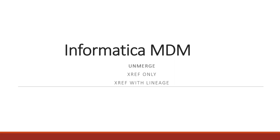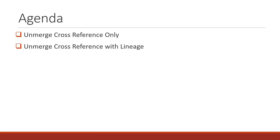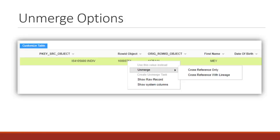Hello everyone, welcome back to today's tutorial on Informatica MDM. In today's tutorial we are going to explore the unmerge functionality in Informatica. We can perform unmerge in two ways: the first option is unmerging records with the cross-reference only option, and the second way is unmerging records using cross-reference with lineage option.